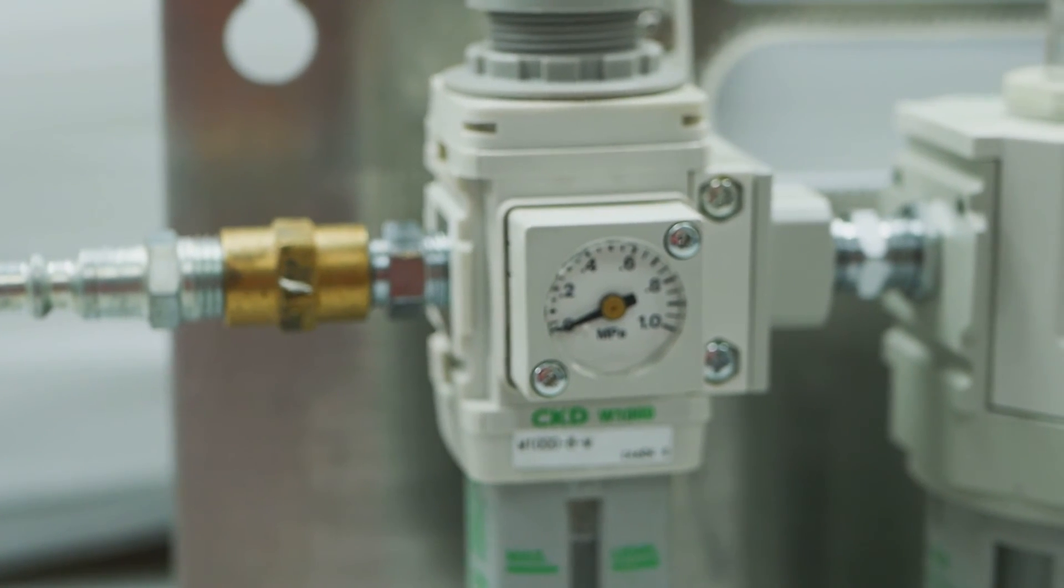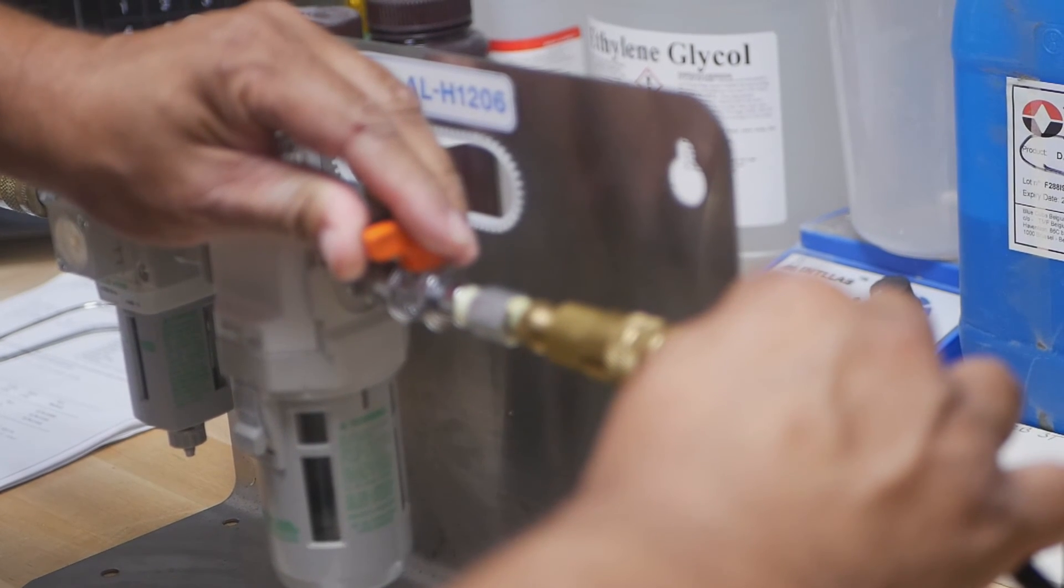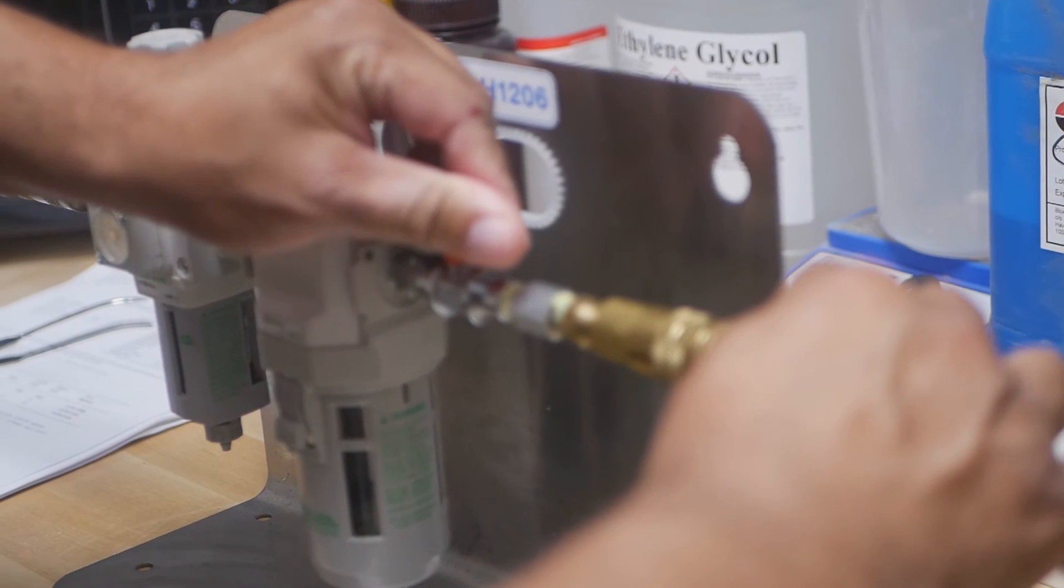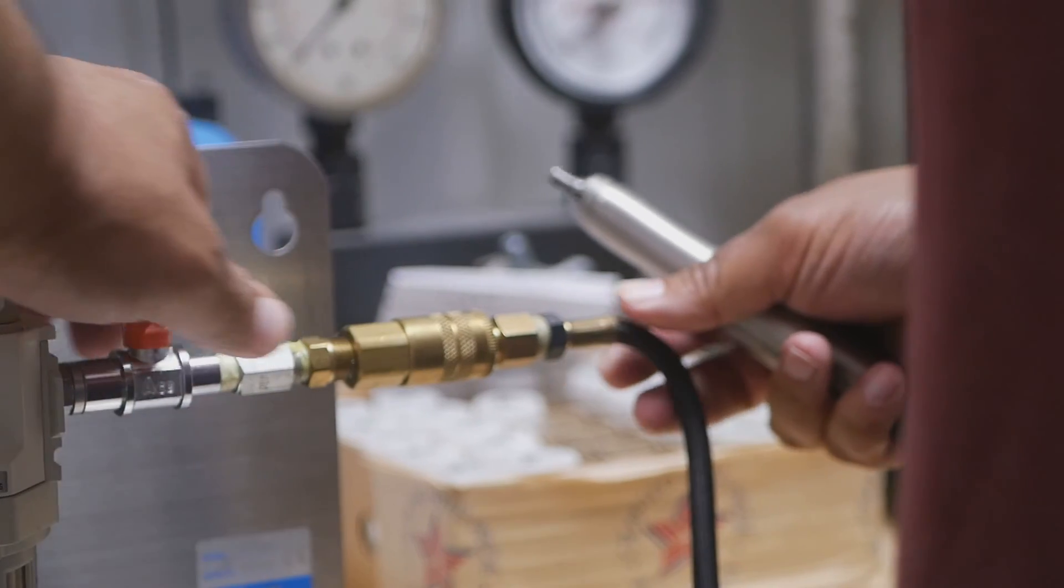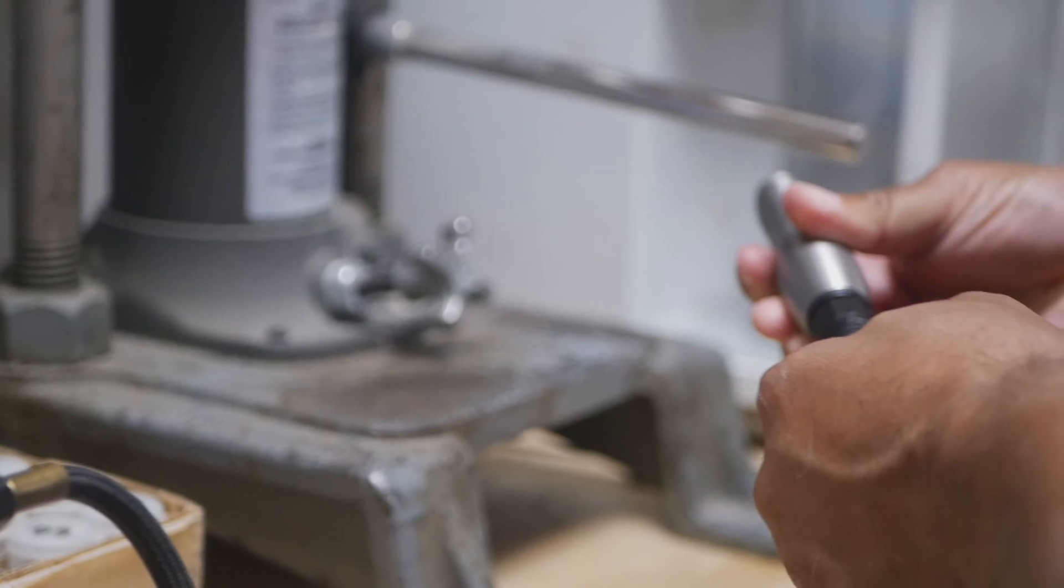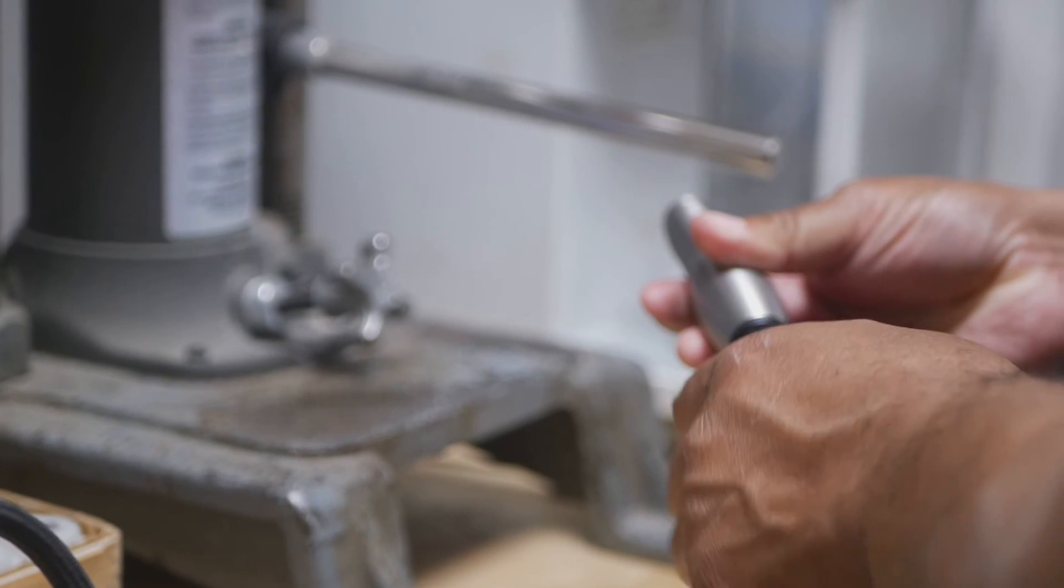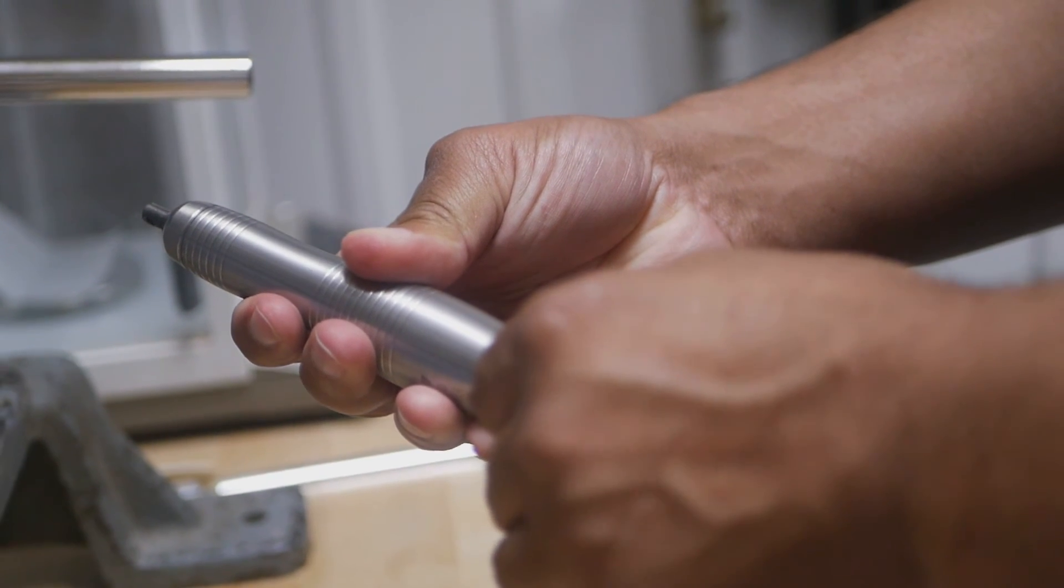A profiler might also fail to work if the tool is dropped repeatedly on a hard surface. This can put pressure on and easily damage the internal components of the tool. Finally, if the tool is not properly regulated at a max of 85 PSI, you'll run into problems as well.